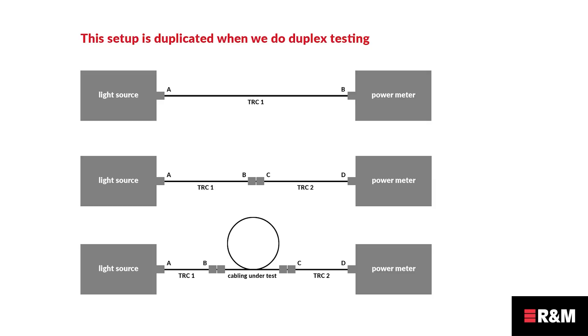These testers enable us to do two things at the same time. We have now just zeroed the first two test reference cords, each of which will be used in the duplex link that we will be testing. We next need to measure the value of the second test reference cord in each of the links. Again, here we can measure both TRCs at the same time.